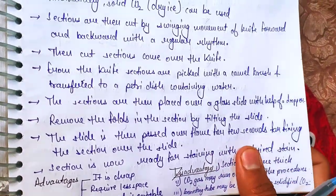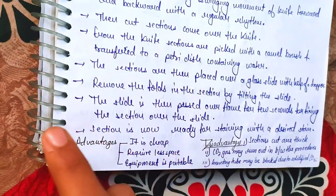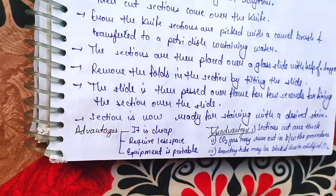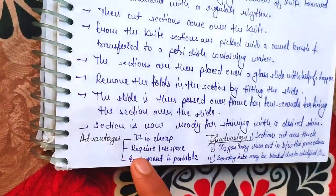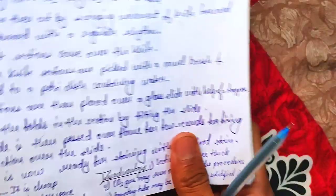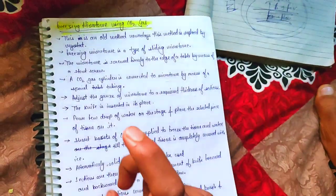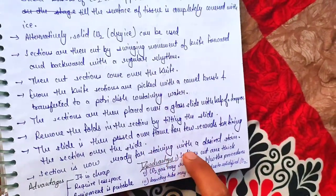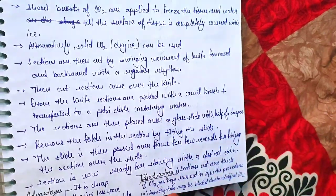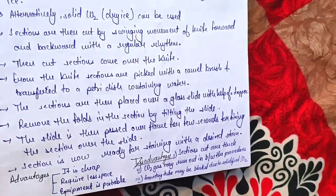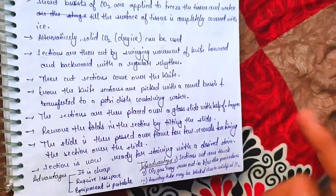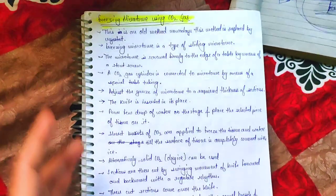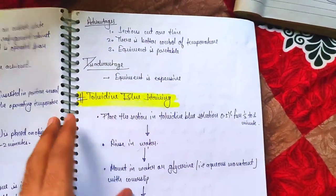The section is now ready for staining with the desired stain. The advantages of this CO2 freezing microtome method are that it is cheap, easy, requires less space, and the equipment is portable — you can take it from one place to another. The disadvantages are that sections tend to be thick, the CO2 gas can run out, and the connecting tube may be blocked by solidification of CO2.